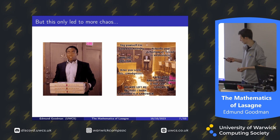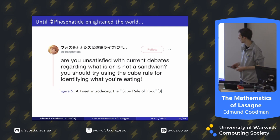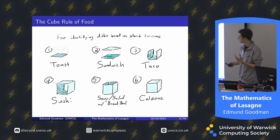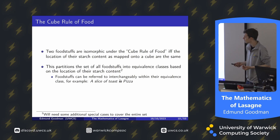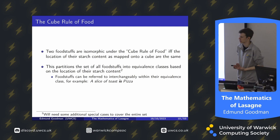Then phosphatide came along and enlightened the world. They came up with the cube rule of food, which allows you to identify what you're eating based on where the starch locations are on a cube. We can now say in a more formal sense that two foodstuffs are isomorphic under the cube rule of food if and only if the location of their starch content as mapped onto the cube are the same. This partitions the set of all foodstuffs into equivalence classes, and within these equivalence classes we can refer to foodstuffs interchangeably — so for example, a slice of toast is pizza.